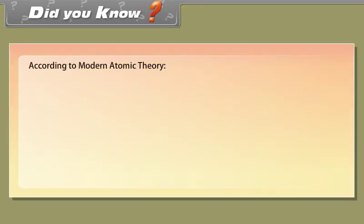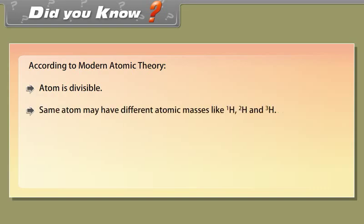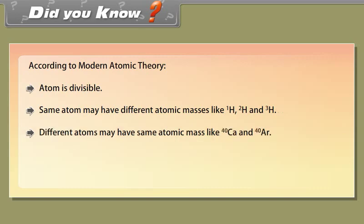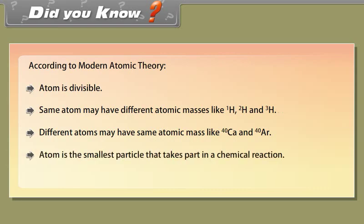Did you know? According to modern atomic theory, the atom is divisible. The same element may have different atomic masses — for example, ¹H, ²H, and ³H. Different atoms may have the same atomic mass, such as ⁴⁰Ca and ⁴⁰Ar. The atom is the smallest particle that takes part in a chemical reaction, and the mass of an atom can be converted into energy.